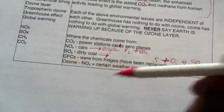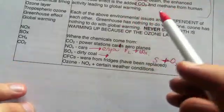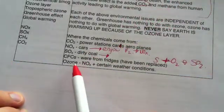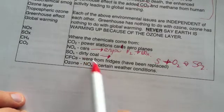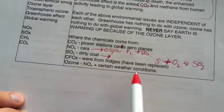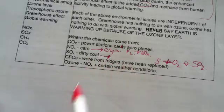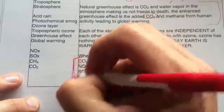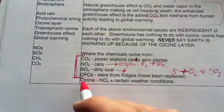Ozone formation happens near the ground and is basically due to the presence of nitrogen oxides and the formation of certain weather patterns and conditions. The main ones to know are CO2, NOx, SOx, and CFCs — if you know where these come from, you should be well covered.